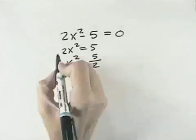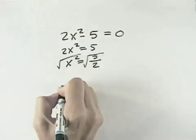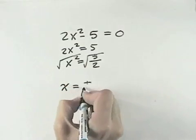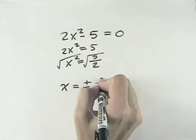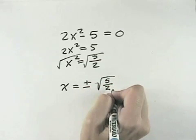But to get rid of the squared power, we take the square root of both sides. So when we do that, the square root of x squared is just x. But remember, there's always a positive and a negative square root. So that means x can either equal the positive square root or the negative square root of 5 over 2.